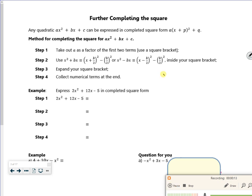So I need to take out a as a factor first, which is what says at step one, so I'm not going to write that. So I want two lots of, it'll be x squared plus 6x minus 5.